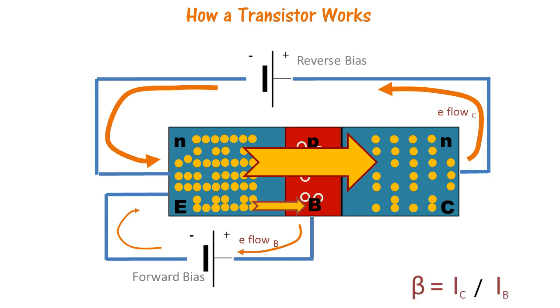This amplification of current is known as beta and this could have values like 20 or 200. It's a property of the material, the NPN transistor. By Kirchhoff's law, current in the emitter is given as a sum of IB plus IC.